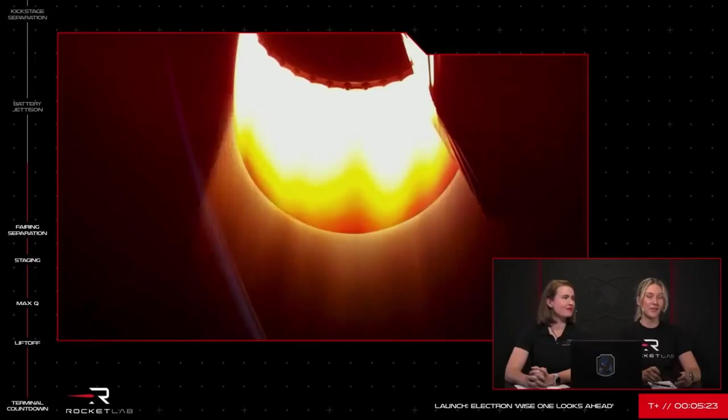If you were ever curious, when Electron takes off, it weighs 13 tons, but 90% of that is actually fuel. Electron is so efficient that by the time we reach MECO, it only weighs 1.25 tons.